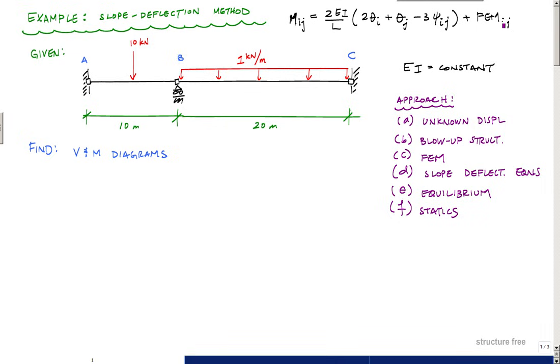Here's the problem that we're going to look at: it's a continuous beam ABC. At point A it's fixed, at B it's a roller, and C it's fixed. I've got a concentrated load of 10 kilonewtons at mid-span between AB, and 1 kilonewton per meter uniformly distributed across BC.